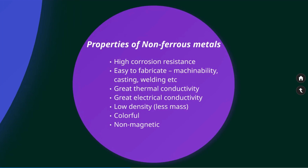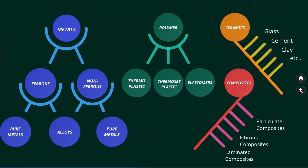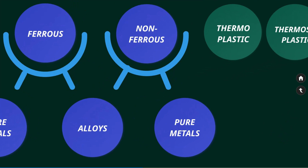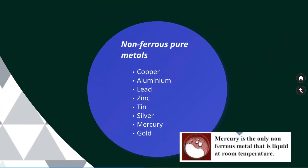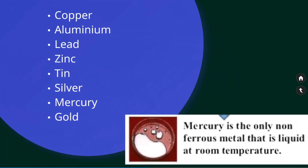Non-ferrous metals are also colorful and non-magnetic. All pure metals are non-ferrous elements except iron. Important non-ferrous metals include copper, aluminium, lead, zinc, tin, silver, mercury, and gold.